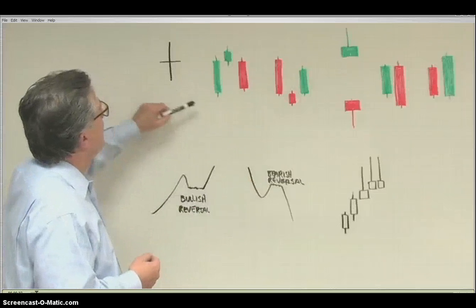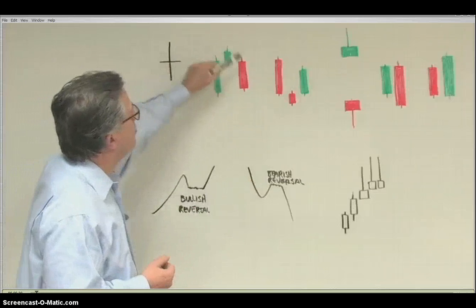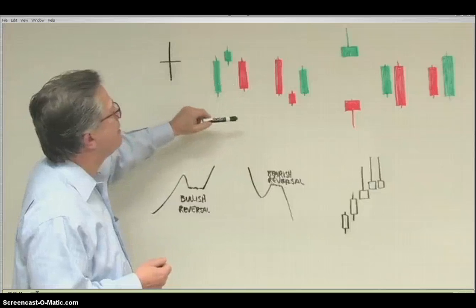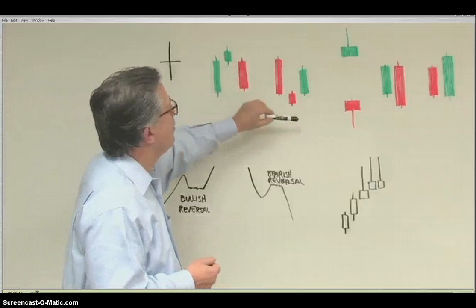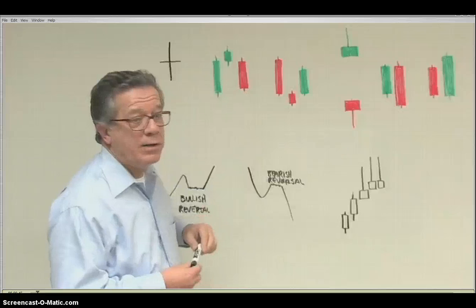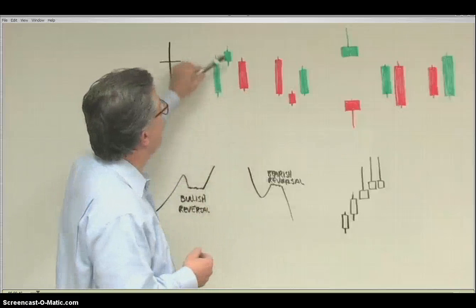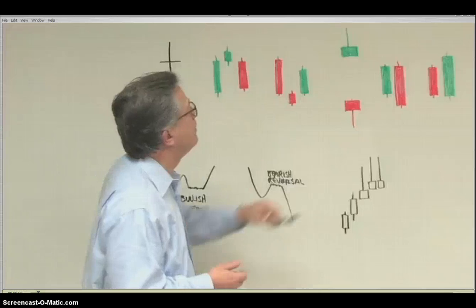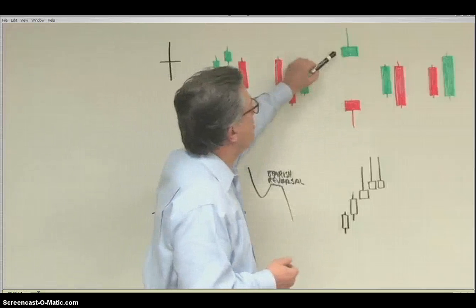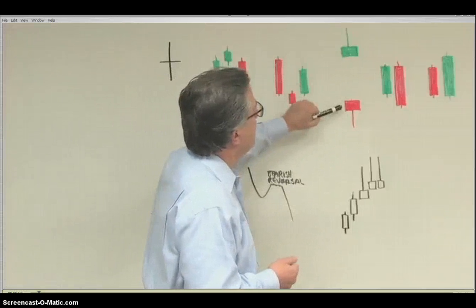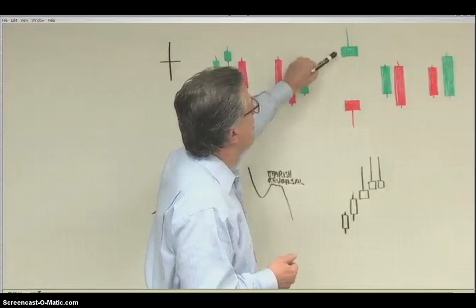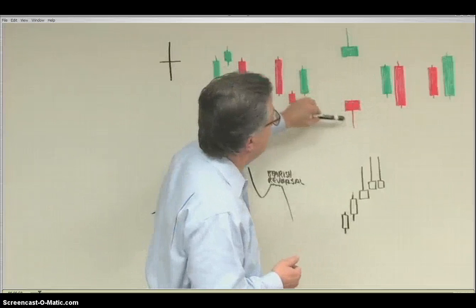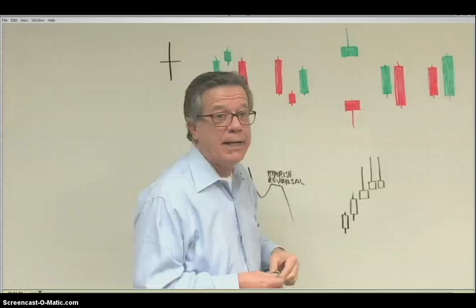There's the doji candlestick. There's the three candle pattern — in this case this is an evening star. There's another three candle pattern — this pattern represents a morning star. Evening star means the pair is likely to move down; morning star means the pair is likely to move up. Here's a shooting star candlestick and here's a hammer candlestick. Shooting star indicates the pair is likely to reverse to the downside; hammer indicates it's likely to reverse to the upside.